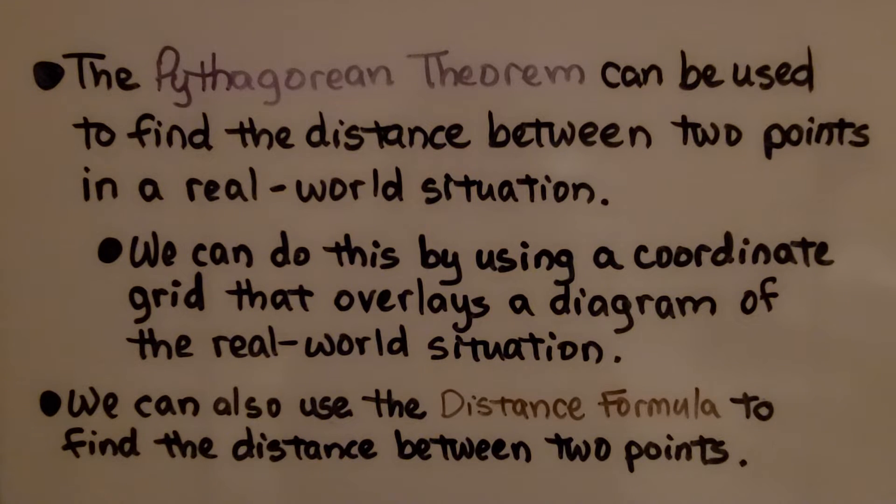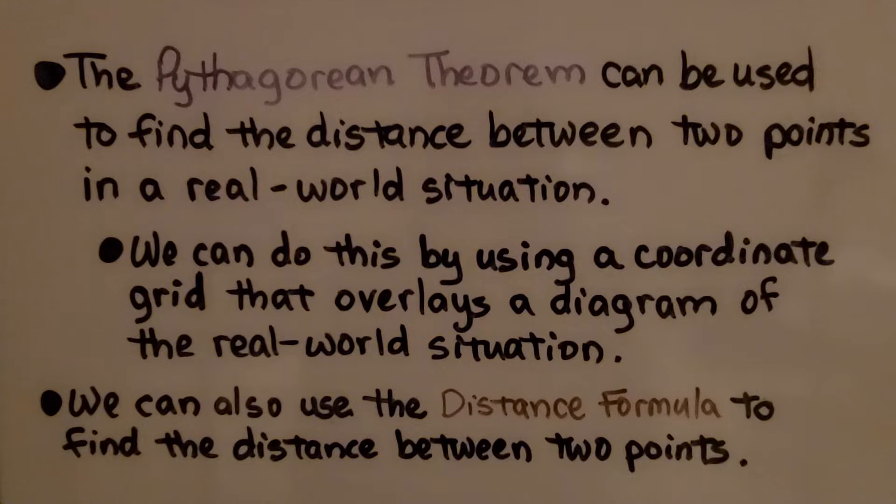We can do this by using a coordinate grid that overlays a diagram of the real-world situation. For overlays, it just means to draw a coordinate grid on top of the drawing. We can also use the distance formula to find the distance between two points.